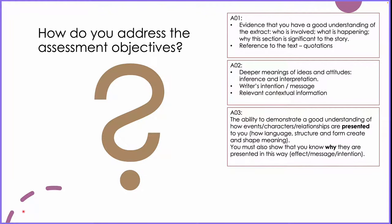AO3 is your ability to demonstrate a good understanding of how events, characters, relationships, and setting are all presented to you. This feeds back into your methods — how language, structure, and form create and shape meaning. You must show that you can really pull apart and dissect the extract: think about the language, the order, the chronology, the structure, the form, the devices, the methods — all of that works together.